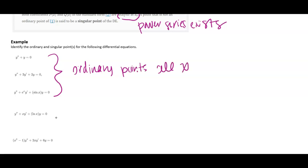And the reason for all X this would be true is these first two have constant coefficients in front of all of our derivative pieces. And the last one, e^X and sine of X, are analytic for all X. Power series exists for those for all X values.